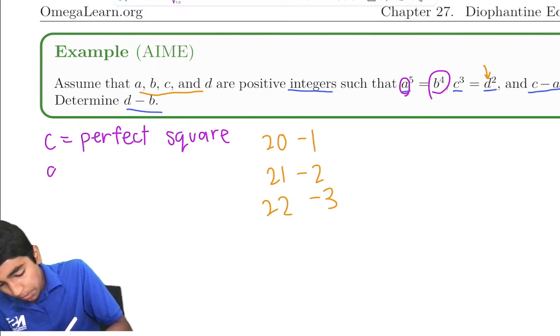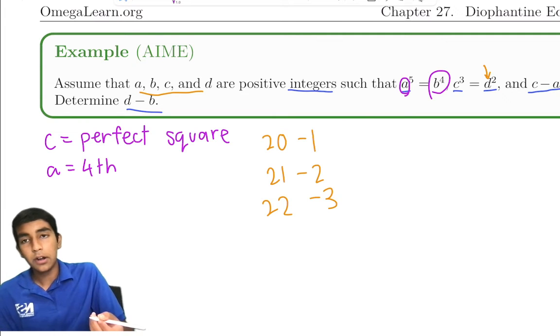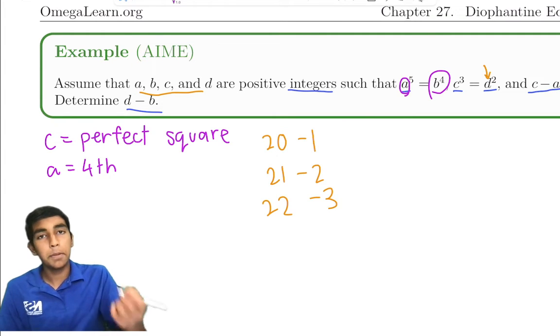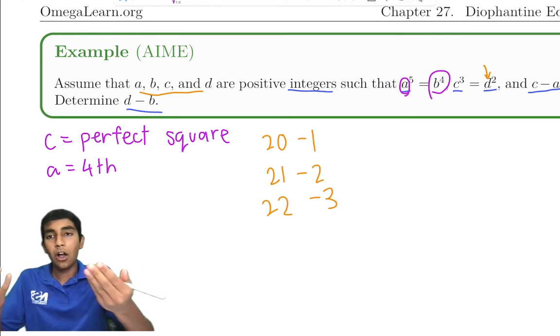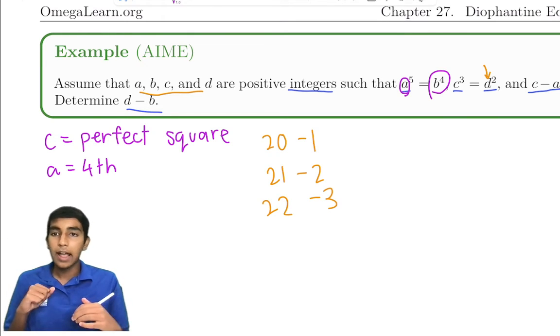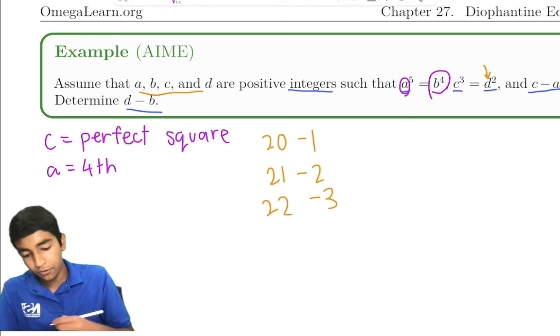So a is a fourth power because if a is not a fourth power, then a⁵ will not be a fourth power, because we're just essentially multiplying all the exponents by 5. And that won't make the exponents all multiples of 4.